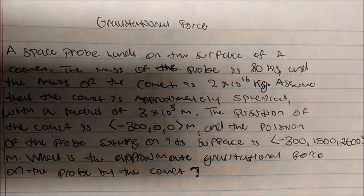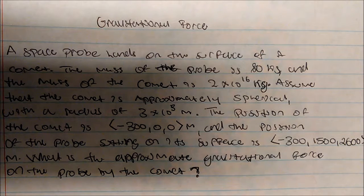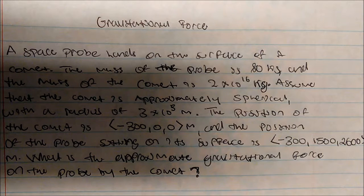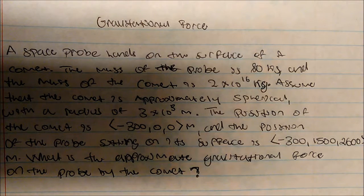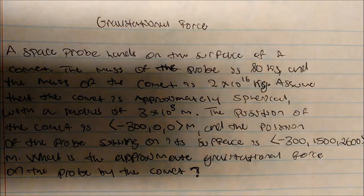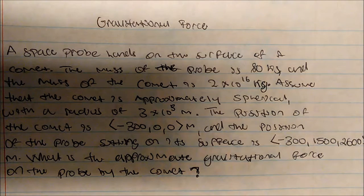The position of the comet is negative 300, 0, 0 meters. The position of the probe sitting on its surface is negative 300, 1500, 2600 meters. What is the approximate gravitational force on the probe by the comet?